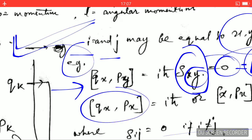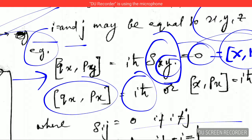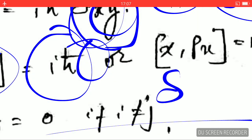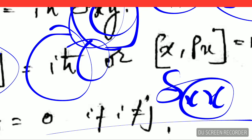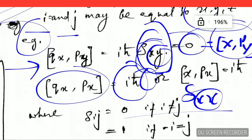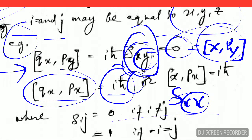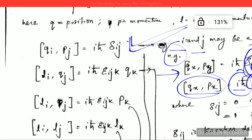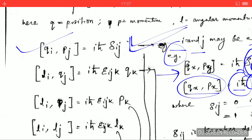Let's take another example where the subscripts are both X. Then the delta function δ_XX equals one since both subscripts are the same, so the result is iℏ. This can be written as [X, P_X] = iℏ. So by remembering just one formula, you can find out many other commutation relations between position and linear momentum.